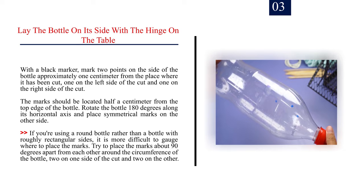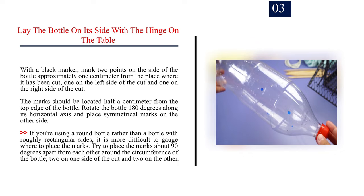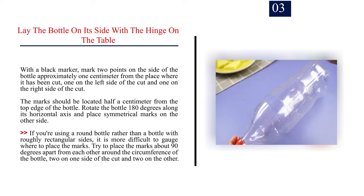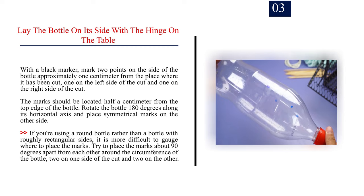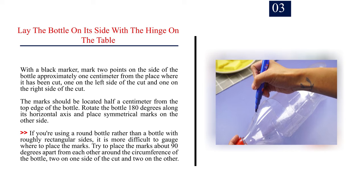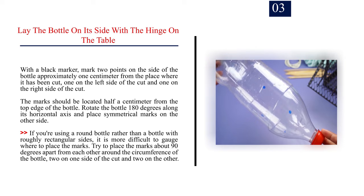Number 3: Lay the bottle on its side with the hinge on the table. With a black marker, mark two points on the side of the bottle approximately 1 cm from the place where it has been cut, one on the left side of the cut and one on the right side of the cut. The marks should be located half a cm from the top edge of the bottle. Rotate the bottle 180 degrees along its horizontal axis and place symmetrical marks on the other side. If you're using a round bottle rather than a bottle with roughly rectangular sides, it is more difficult to gauge where to place the marks. Try to place the marks about 90 degrees apart from each other around the circumference of the bottle, two on one side of the cut and two on the other.